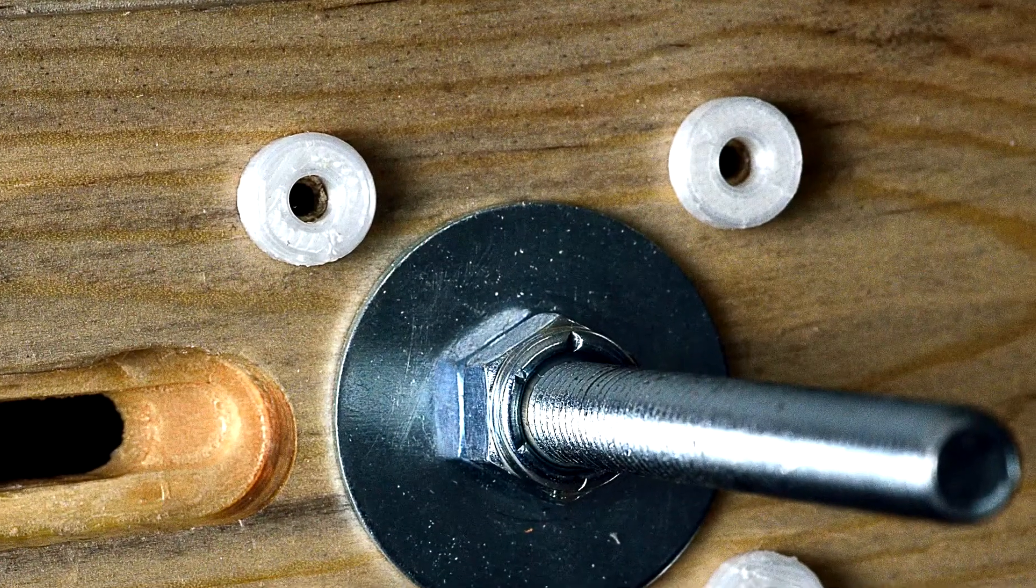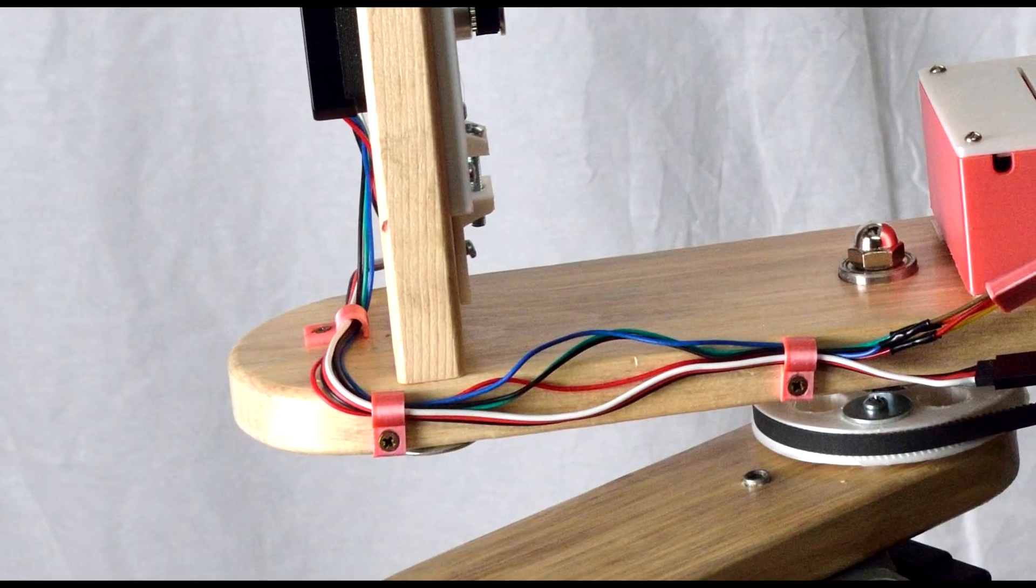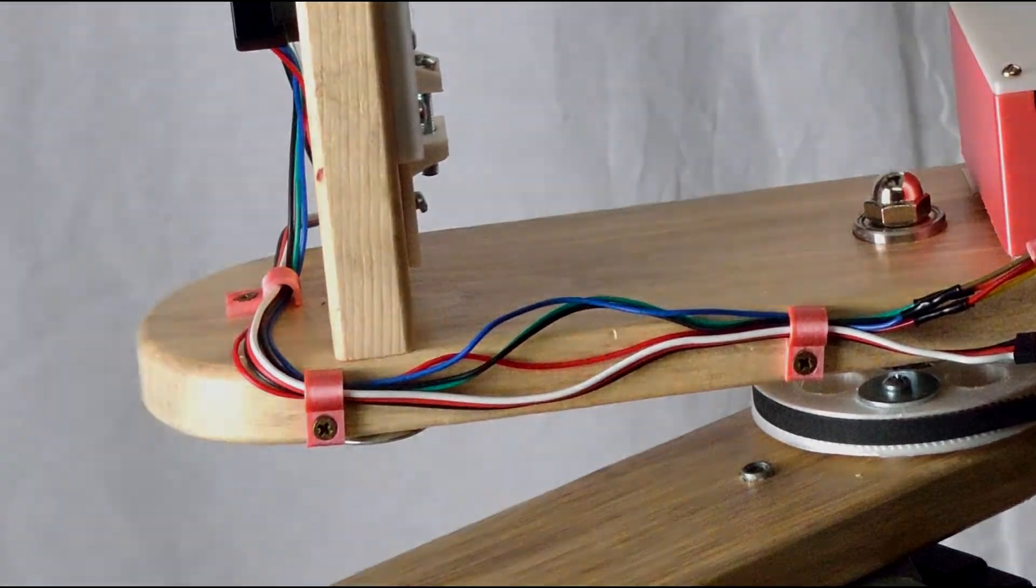Spacers for the large pulley and cable clips were printed with the 3D printer, but these could be replaced by washers and appropriate cable clips.